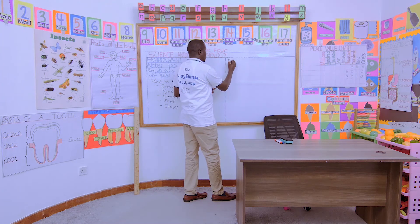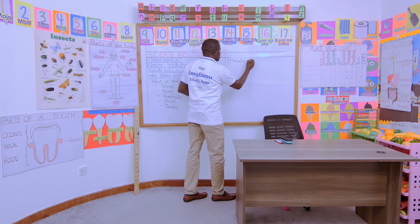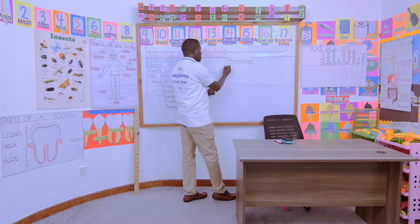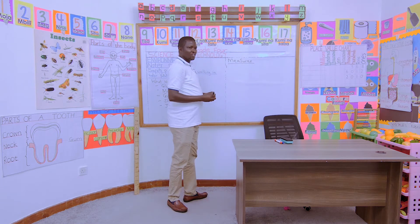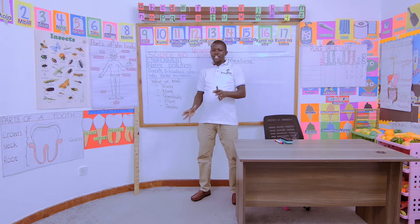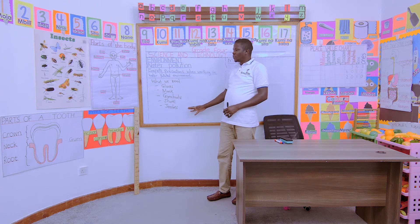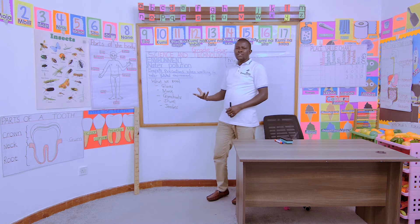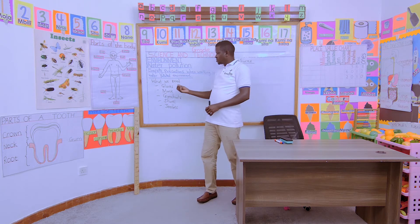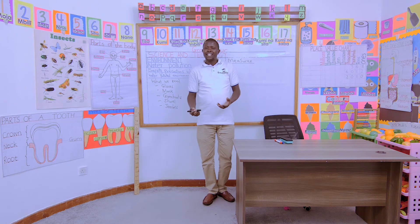Now, measures to observe. What are the measures to observe? What are the precautionary measures to observe? In our groups now, can we look more at this — why do we use gloves, why do we use masks, gumboots, shovels, among others?